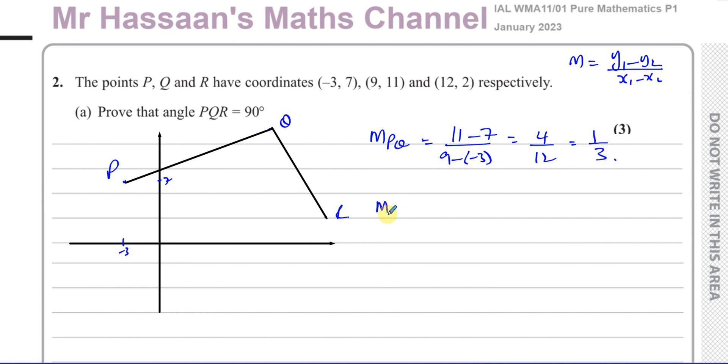Then I'll find the gradient of QR. Same thing here, the change in Y is 2 minus 11 over the change in X, which is 12 minus 9. So 2 minus 11 gives you negative 9, and 12 minus 9 gives you 3. Minus 9 over 3 is negative 3.